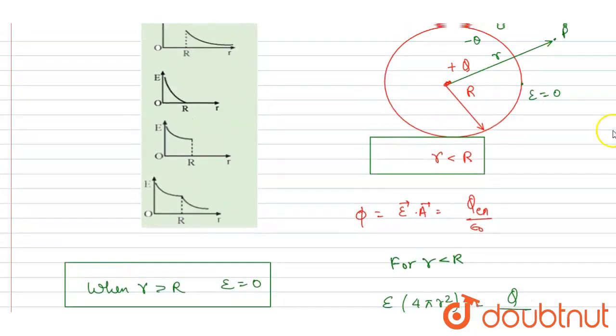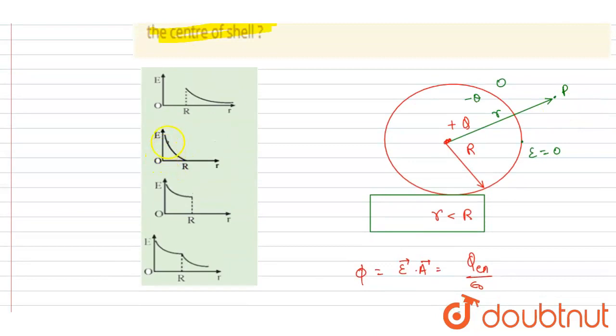So now you can check for the curve at r equals to 0, the field will be approaching toward the infinity. Then after r equals to R, it will be 0. So if you see these two curves, for these two curves, for greater than R, the field is not 0. So you can cancel out.